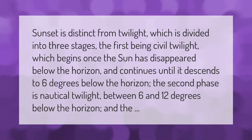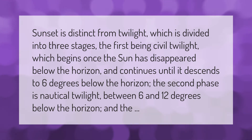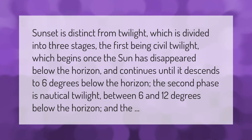Sunset is distinct from twilight, which is divided into three stages. The first is civil twilight, which begins once the sun has disappeared below the horizon and continues until it descends to six degrees below the horizon. The second phase is nautical twilight, between six and twelve degrees below the horizon.